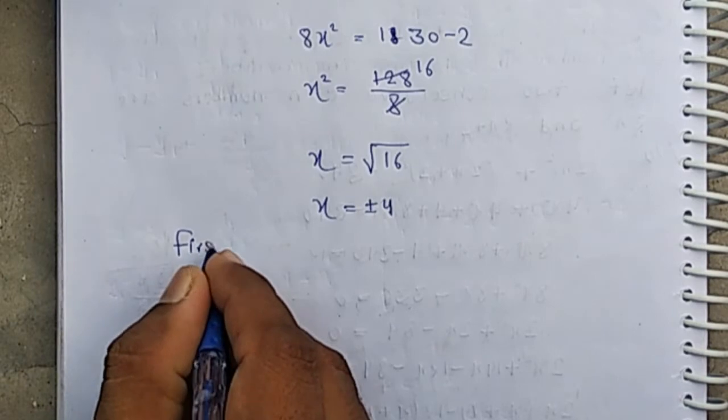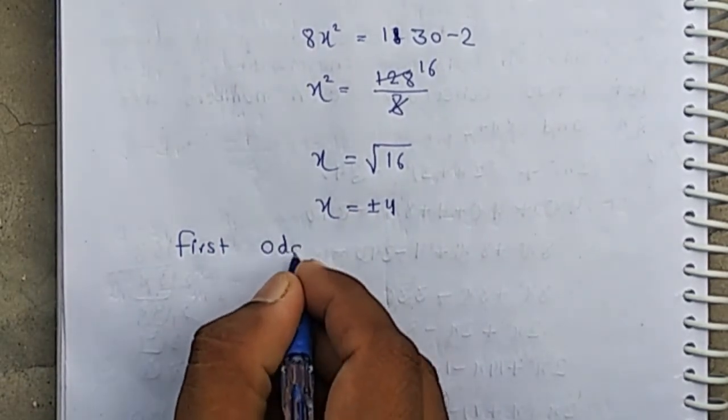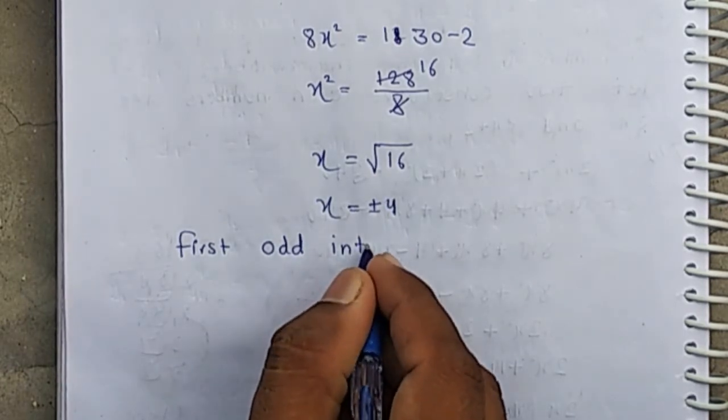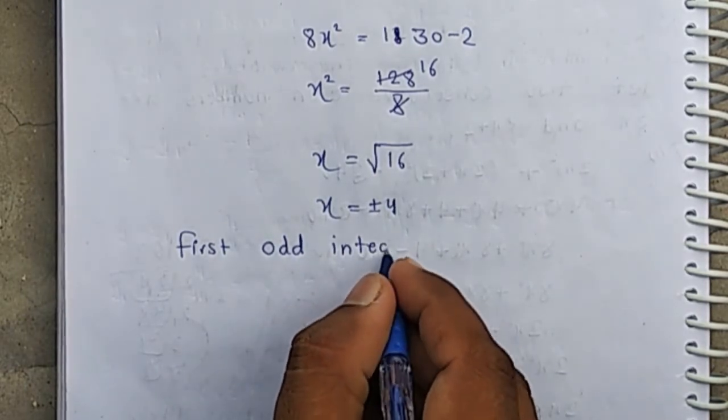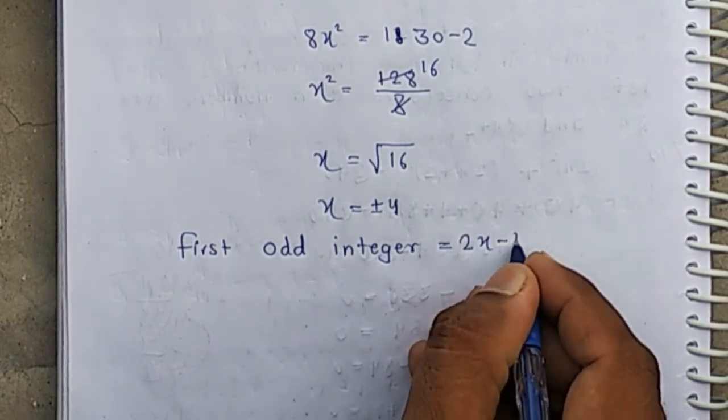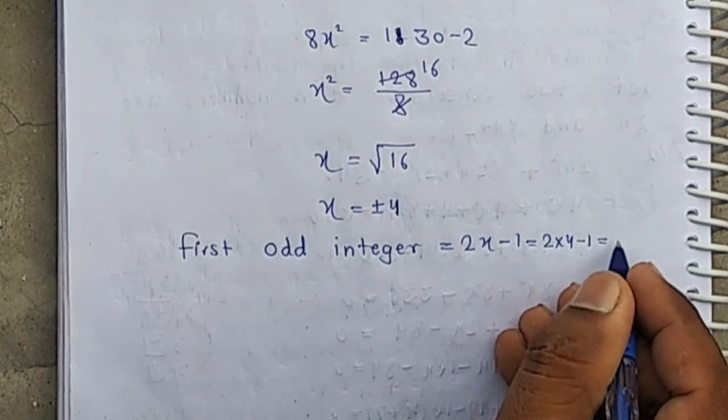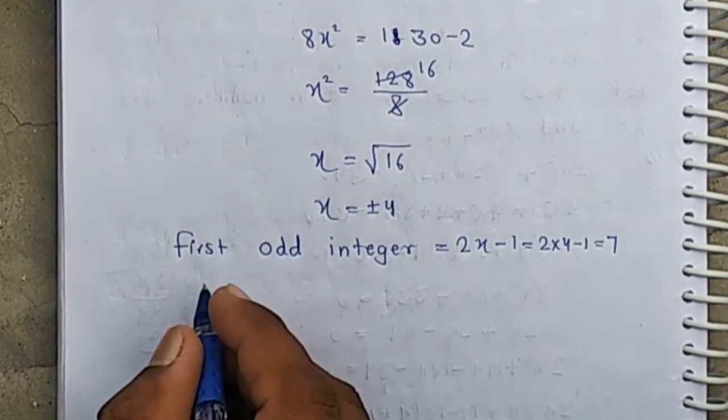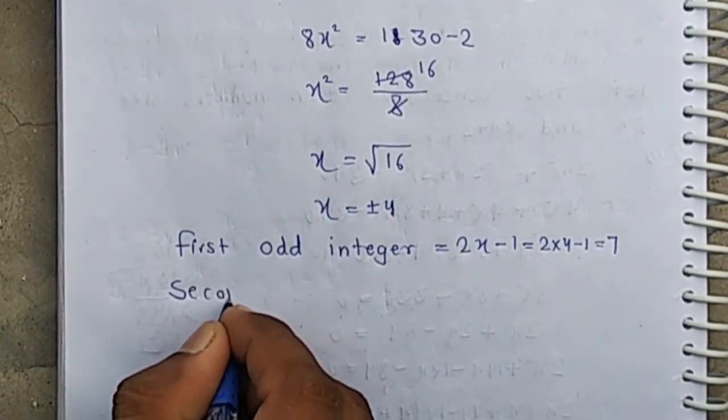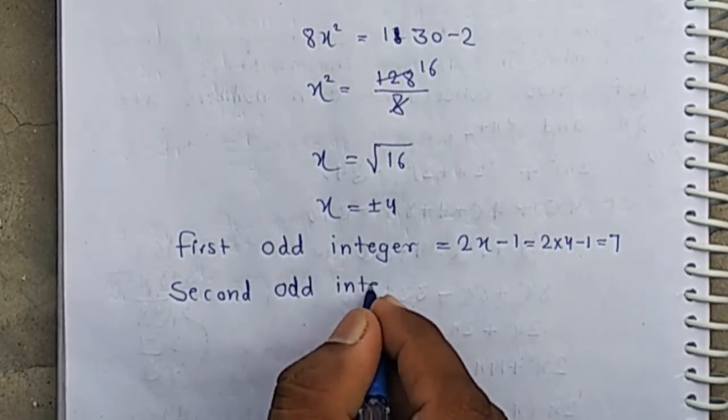Then first odd integer: 2x minus 1 means 2 times 4 minus 1 equals 7. And second odd integer...